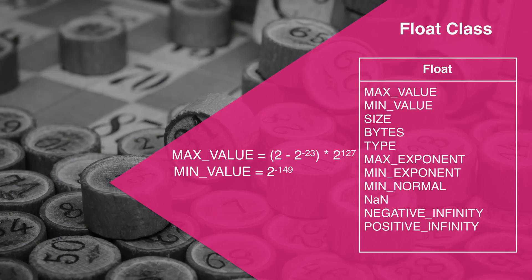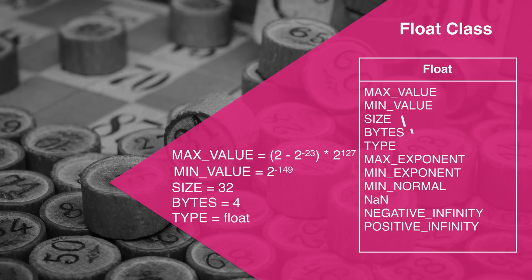The Float class has 7 more constants for a total of 11 constants. MAX_VALUE and MIN_VALUE return the maximum and minimum numbers representable with a float — again, useful in programs where you need to set the edges for your numbers. BYTES and SIZE also return the primitive size for the machine, and TYPE still returns a class describing the float class. These all work the same way as they do for integers.